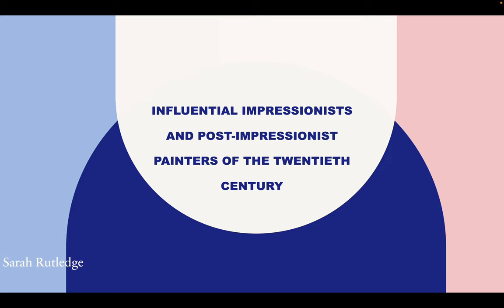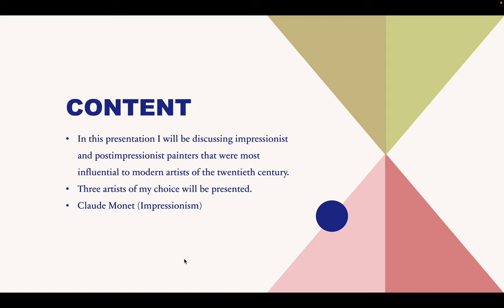My name is Sarah Rutledge and this is my Art 100 presentation. I hope by the end of my presentation you will have a better understanding of Impressionist and Post-Impressionist painters. The topic I have chosen is about which Impressionist and Post-Impressionist painters were most influential to modern artists of the 20th century. I will be sharing how each of the artists were influential.